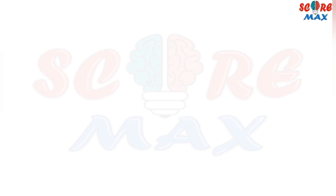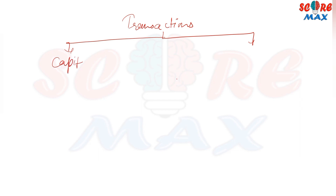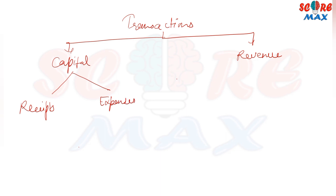First of all, we will see that transactions are of two types: capital transactions and revenue transactions. We can further bifurcate these transactions into two parts, that is receipts and expenses. This is the overview of the various transactions: capital receipts, capital expenditures, revenue receipts, and revenue expenditures.